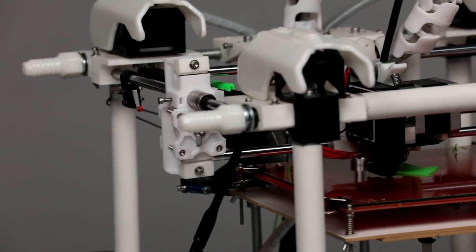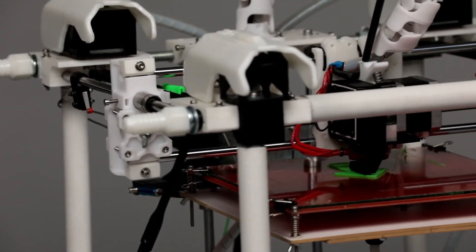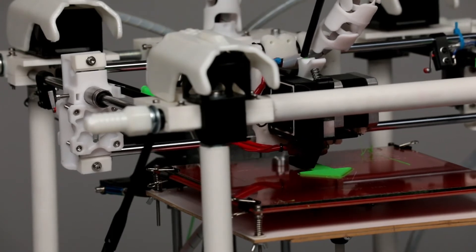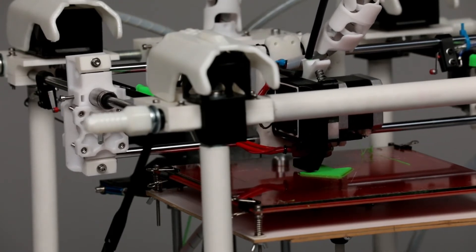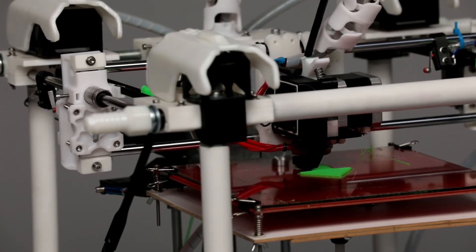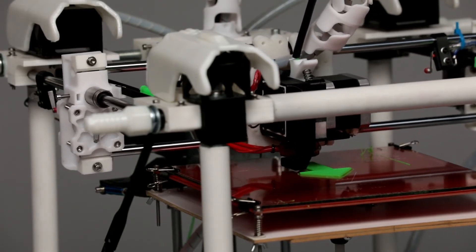By using best-of-breed elements used in printers that cost thousands more, we were able to introduce the first HS high-speed printer – clocking in at an amazing 105mm per second – better than even the most expensive MakerBot and Ultimaker models.